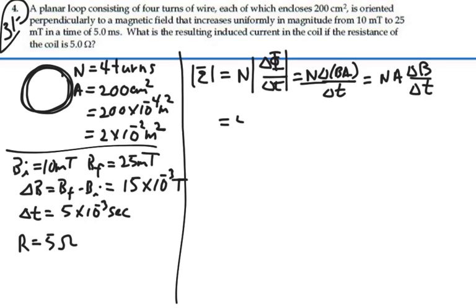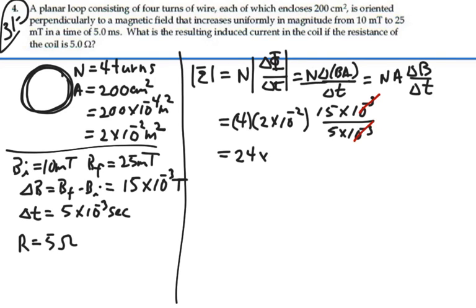So we have 4 turns times an area of 2 times 10 to the minus 2. Our B field is 15 millitesla in 5 milliseconds. The millis cancel out, and we have 24 times 10 to the minus 2 volts. That's our EMF.